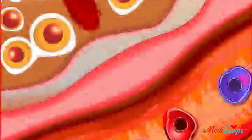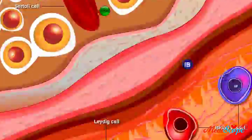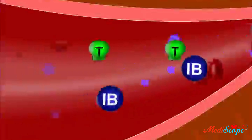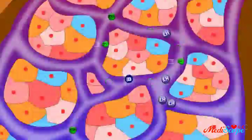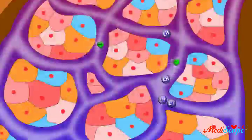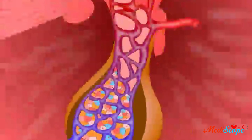To regulate this process, Sertoli cells under the influence of FSH secrete inhibin. Together with testosterone, inhibin travels through the blood vessels back to the anterior pituitary. Inhibin provides negative feedback for FSH. Testosterone provides negative feedback for LH at the level of the anterior pituitary, and also provides negative feedback for GnRH in the hypothalamus.